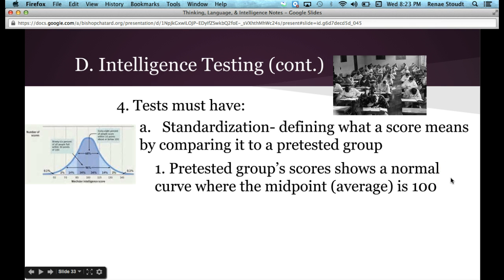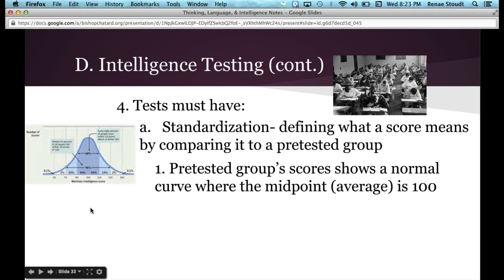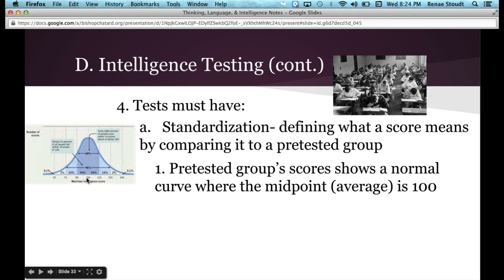On this bell curve, or normal curve, they take all of these people who have taken the test, find the mean point — the average — and set that at 100. Any time everybody else takes the test after it has been standardized, they compare your score to this pre-tested, standardized baseline group.